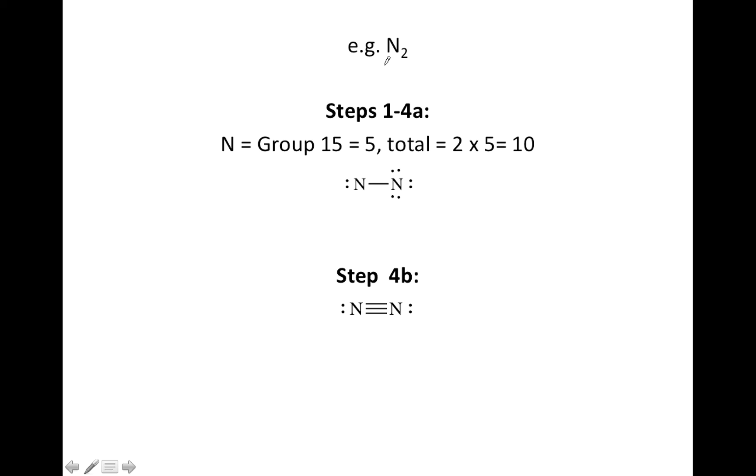Let's just do one final example, N2, which is going to have a triple bond ultimately. We'll quickly go through steps 1 to 4a since nitrogen's in group 15. That's going to have five valence electrons, and there's two of them, so we need 10 total in our drawing.